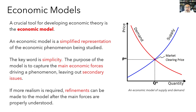For example, later in the course we're going to learn that the price in a market is determined by supply and demand. In order to understand supply and demand, we're going to start by writing down a model of the market with no taxation — even though in real life markets are almost always taxed. We write down a model without taxation because we want to understand the basics of supply and demand according to the most basic forces: the decisions of buyers and sellers on their own, without government interference. Only once we understand these basic forces will we then consider what happens when we add the additional complication of taxation.